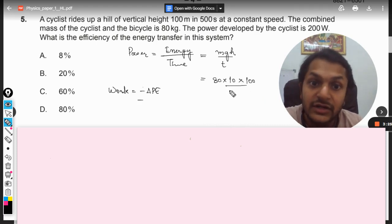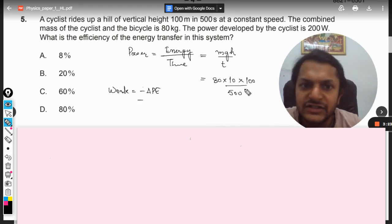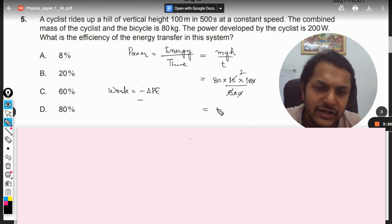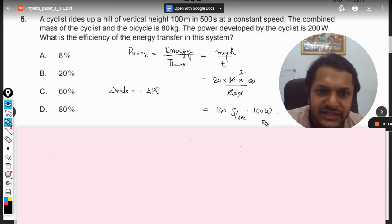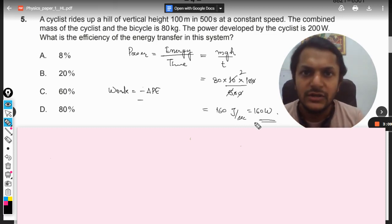What is the mass? Mass is 80 kg, gravity will be taken as 10, and the height will be taken as 100 meters, and it has taken 500 seconds. So now very easily we solve it, so it is coming out to be 160 joules per second.